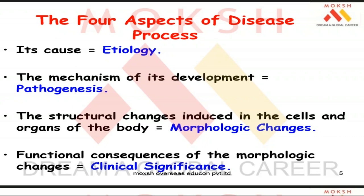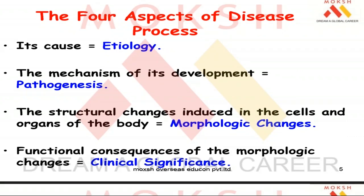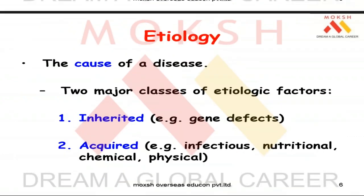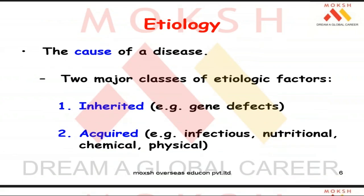To recap: etiology is the cause of a disease. Alcohol causes liver cancer, smoking causes lung cancer, the female Anopheles mosquito bite causes malaria. These are acquired causes.